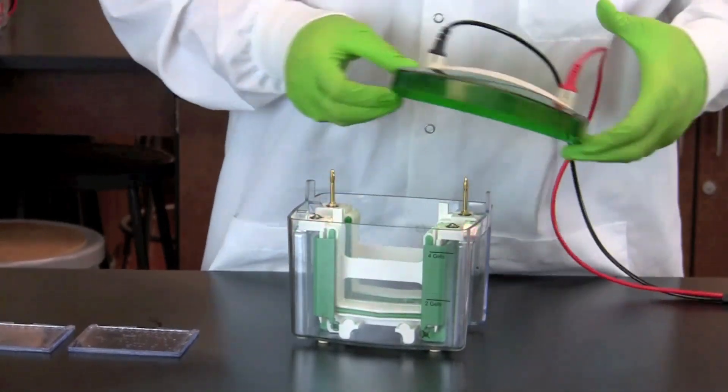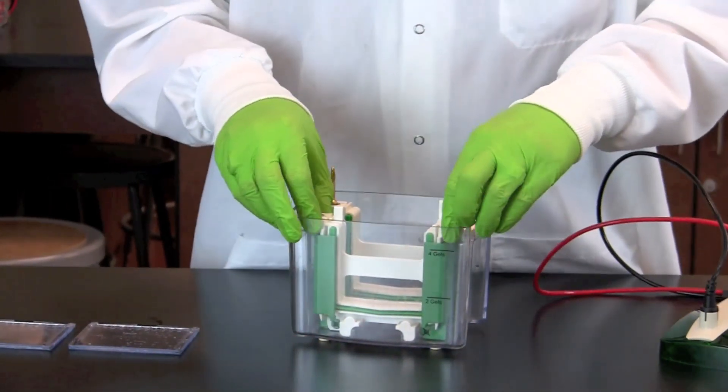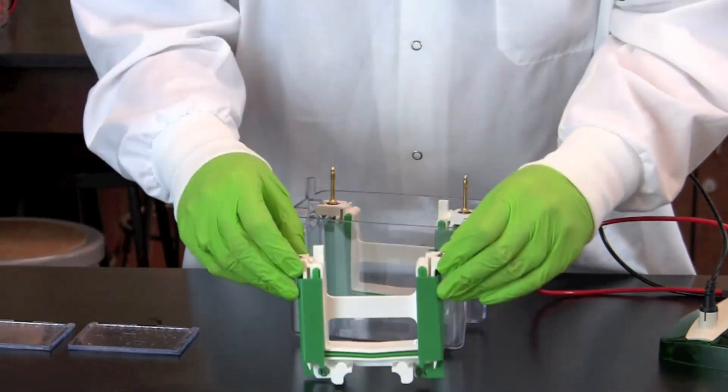To set up the vertical electrophoresis system, remove the electrode assembly from the tank, and open the green clamps.